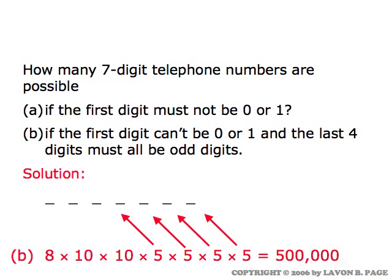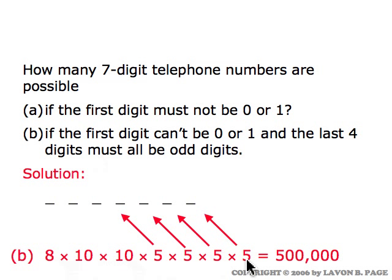For the second question: same restriction on the first digit, but now the last four digits must all be odd. With the first digit, you can have any of the eight digits other than zero or one, then anything in the next two spots, but since there are only five odd digits — one, three, five, seven, and nine — for the last four spots you only have five choices each. So the full calculation is eight times ten times ten times five times five times five times five, giving a total of five hundred thousand possibilities for the seven-digit number.